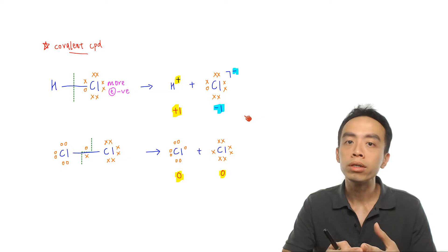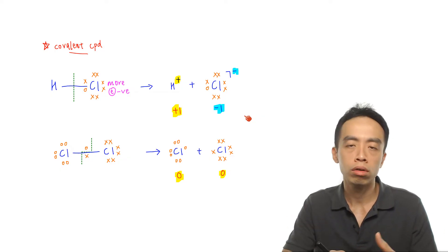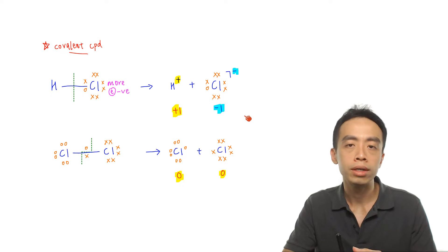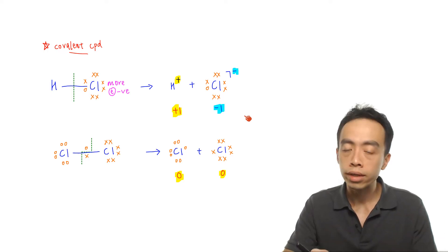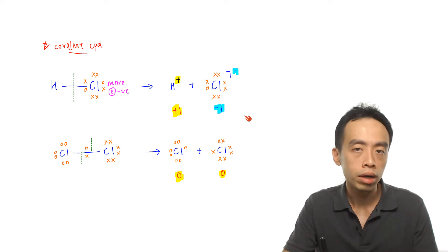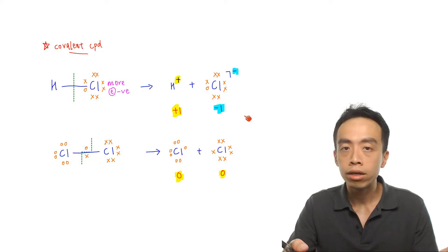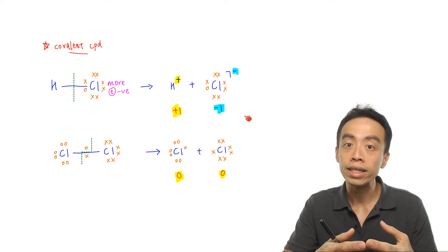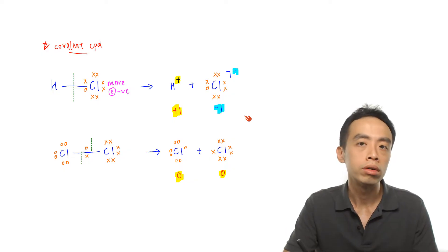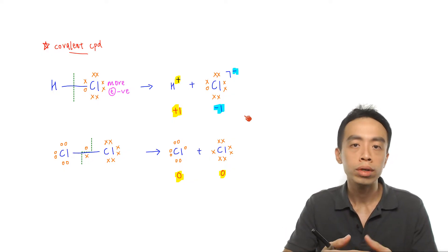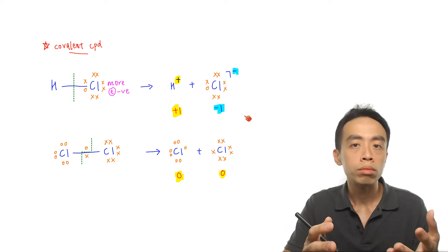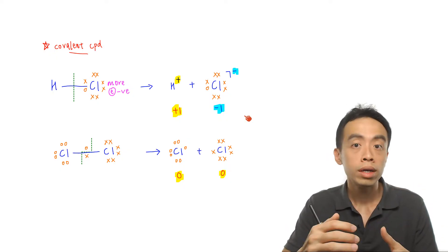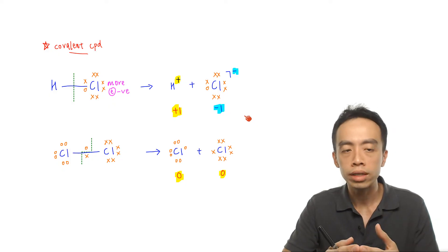For simple covalent compounds, the oxidation number for an element would be the hypothetical charge it would possess if it were an ionic compound. We need to bring in the idea of electronegativity, which is how much an element would like the electrons inside the covalent bond. An element that is more electronegative will pull the electron pair closer to itself inside the covalent bond.